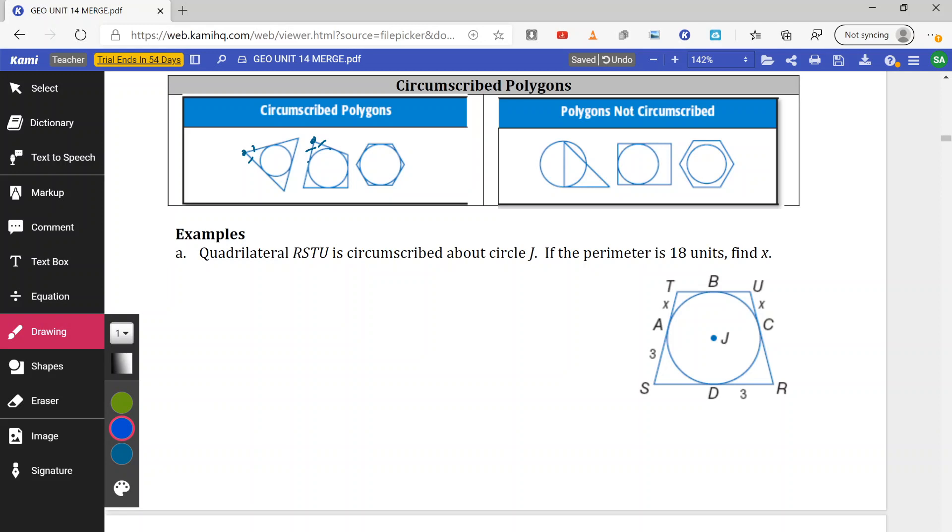So what I want to do is I'm going to go around and mark up what I do know. So circumscribed and the theorem states, if two lines are tangent and meet at the same exterior points, then the two segments are congruent. So T to A is X. That means T to B is X. U to C is X. That means U to B is also X. D to R is 3. That means R to C is also 3. A to S is 3. That means S to D is also 3.